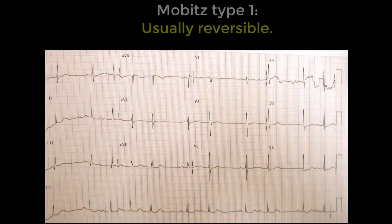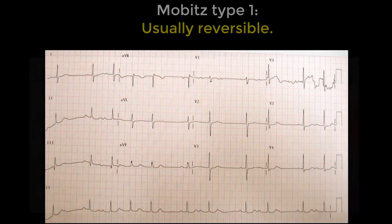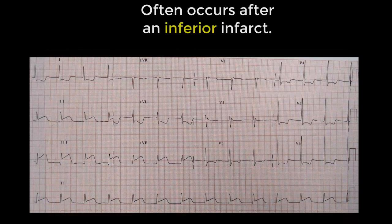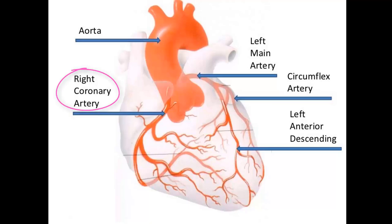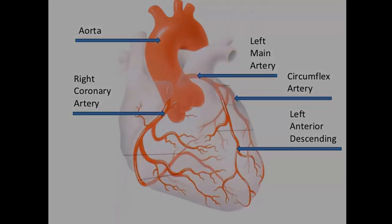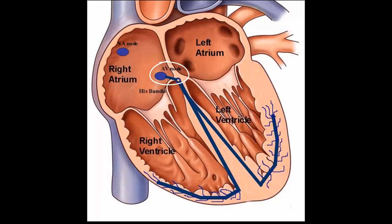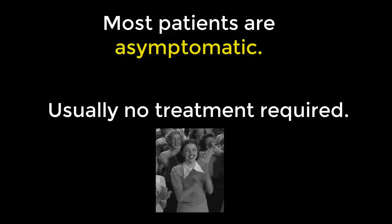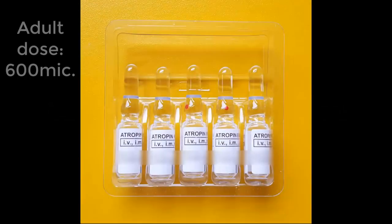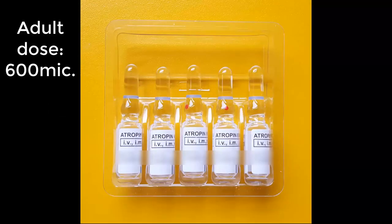Mobitz type one is usually a reversible condition and is often seen soon after an inferior infarct. The inferior part of the heart is supplied by the right coronary artery, which also supplies the AV node, so it's not surprising that in an inferior infarct your AV node may also be playing up. The causes are essentially the same as those for first degree heart block. Most patients are asymptomatic and don't require treatment.